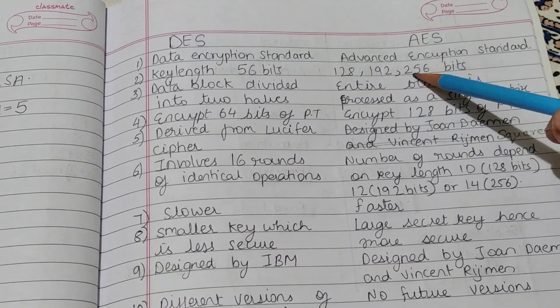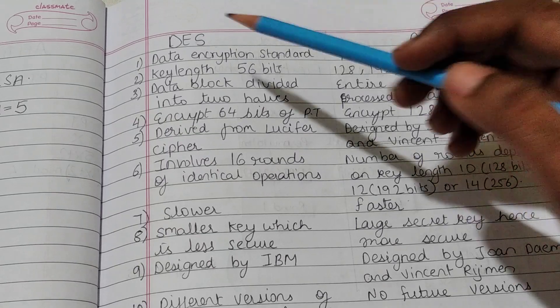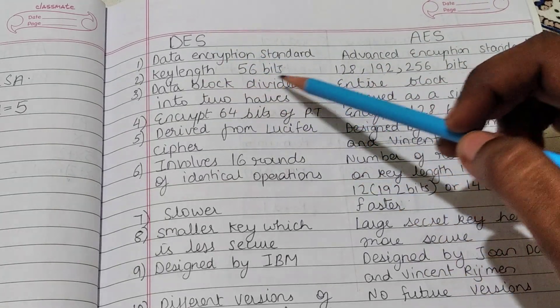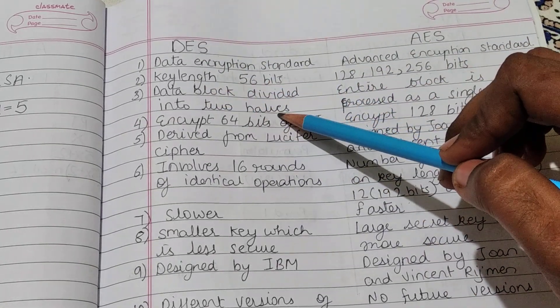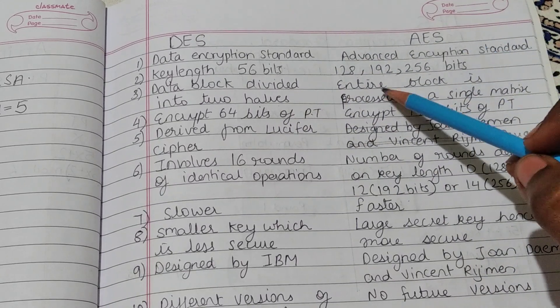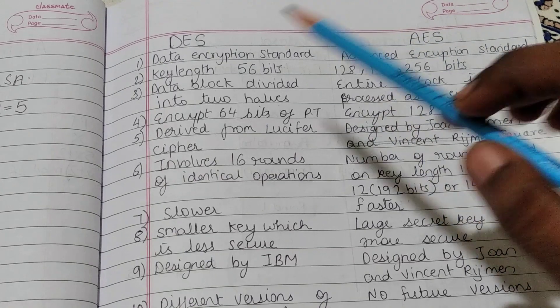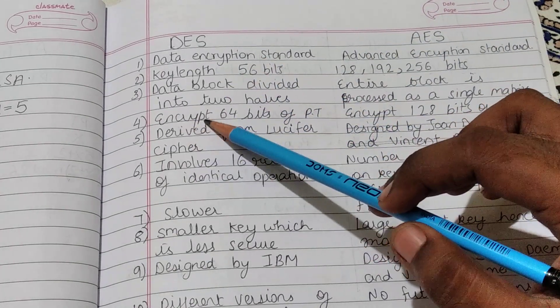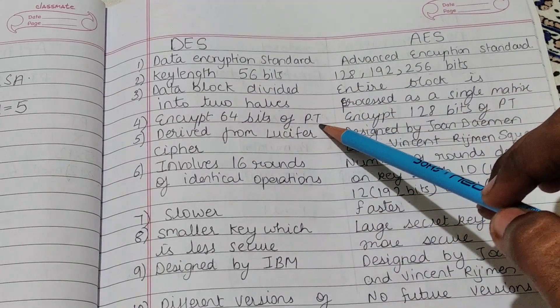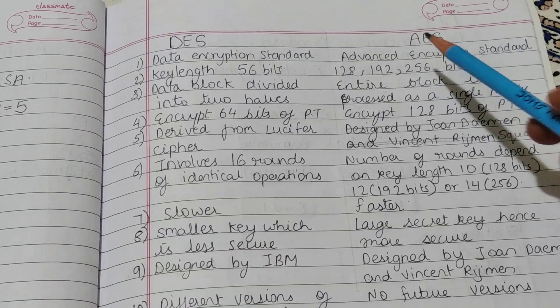In DES the data block is divided into two halves, but in AES entire block is processed as a single matrix. DES encrypts 64 bits of plain text, but in AES it will encrypt 128 bits of plain text.